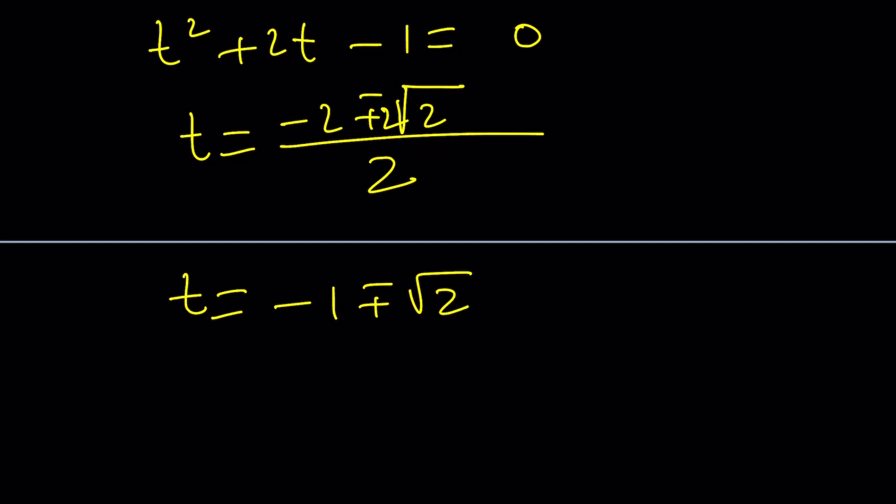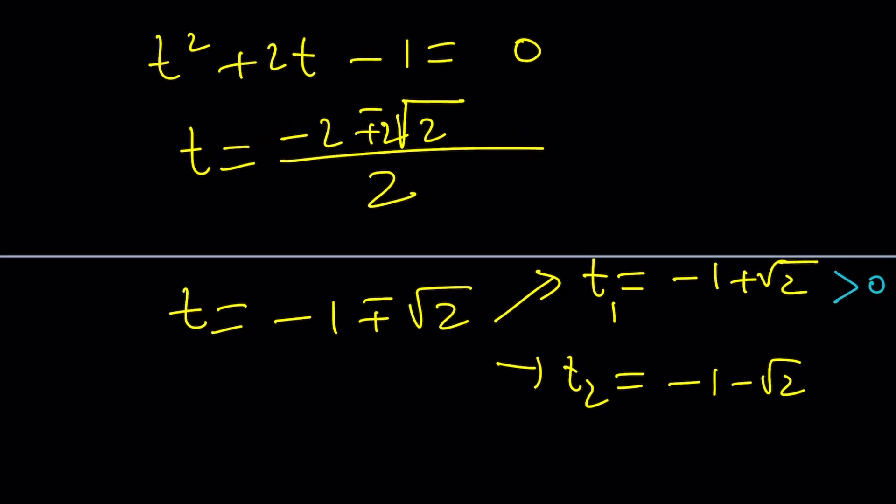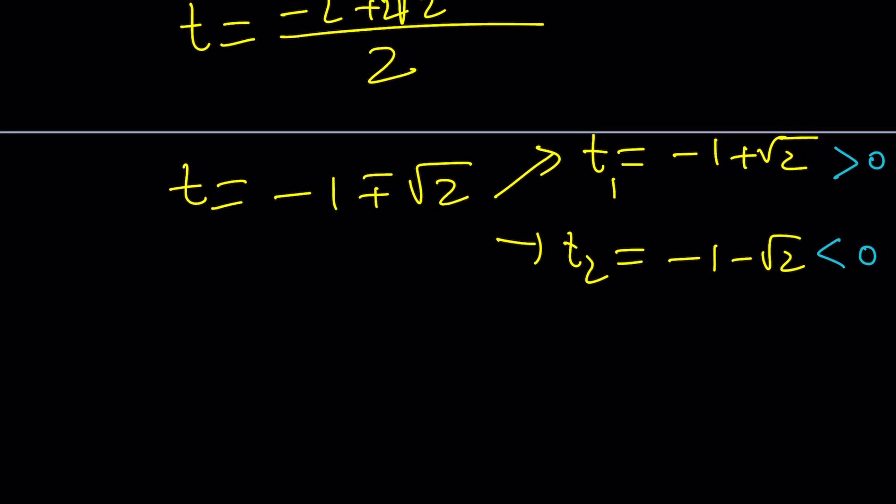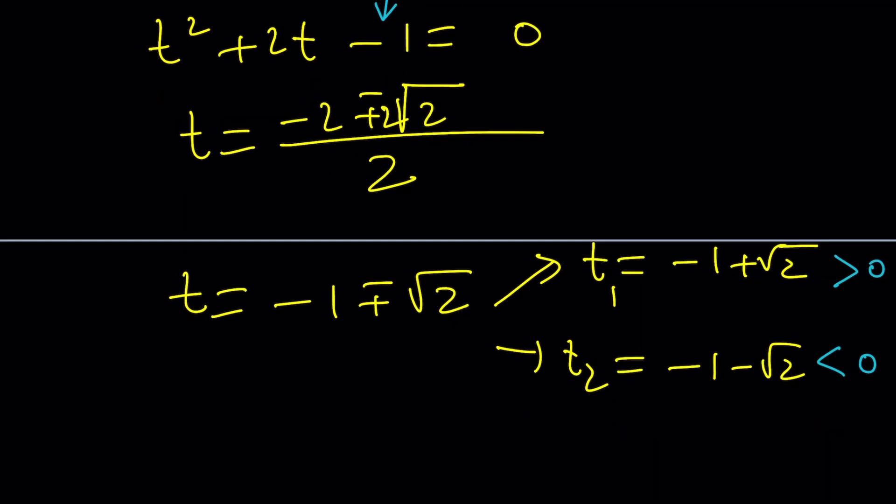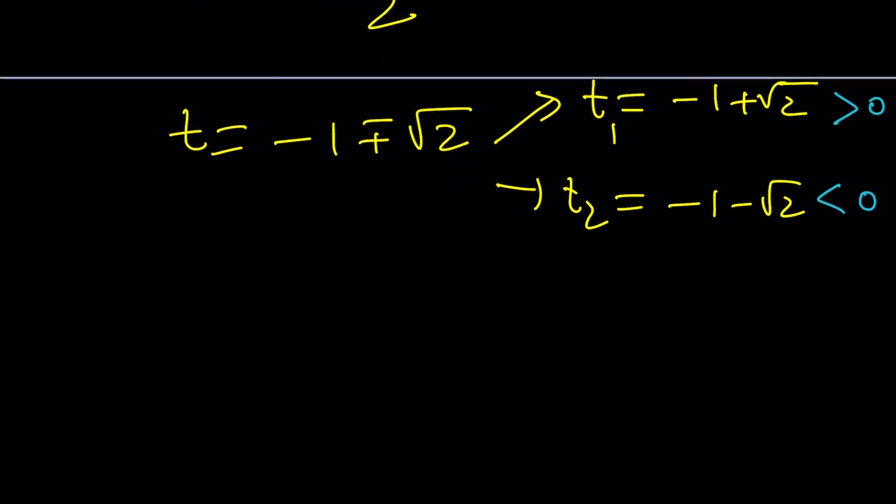There are two t values. One of them is t sub 1, negative 1 plus root 2. The other one is t sub 2, negative 1 minus root 2. And notice that one of the t values is positive, the other one is negative. And you should know that because look at the c over a from Vieta's formulas. It's negative.